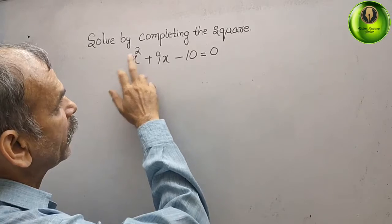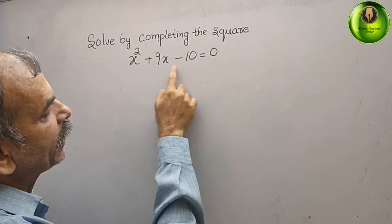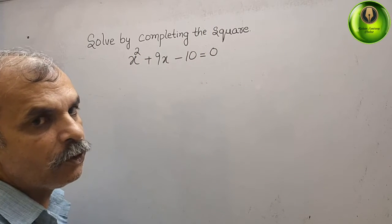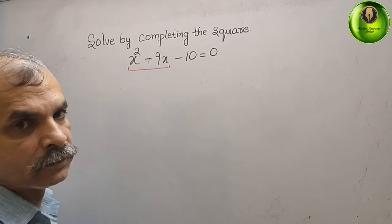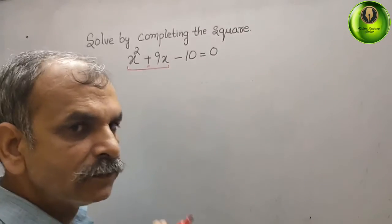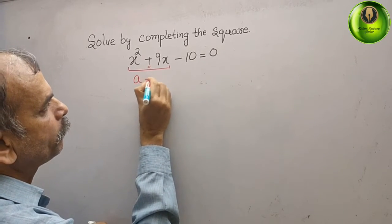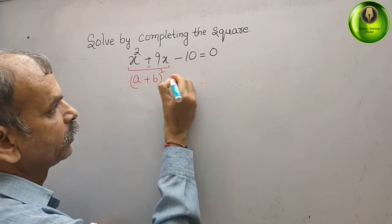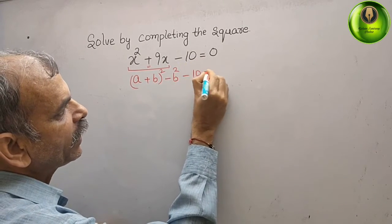The question is to solve by completing the square. They have given x squared plus 9x minus 10 equals 0. We have to look up to the middle term. In between the first and second terms there is a plus sign. We will make here an (a + b) whole square and subtract b squared, and here it is minus 10, giving you 0.